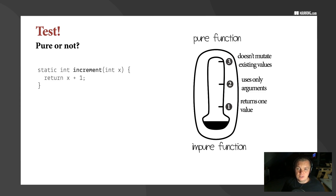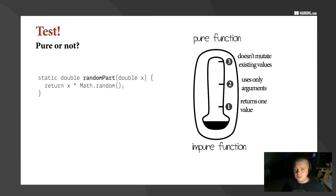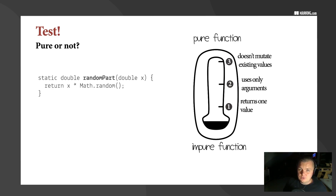Increment is a pure function — it doesn't mutate, it uses only arguments, and returns only one value always. The random function is a tricky one because it's not pure. It returns one value, but it uses more than just the argument — it also uses Math.random, which is outside of the parameter list. That means it's not a pure function. We won't be able to predict what value we get when we call it with the same argument.